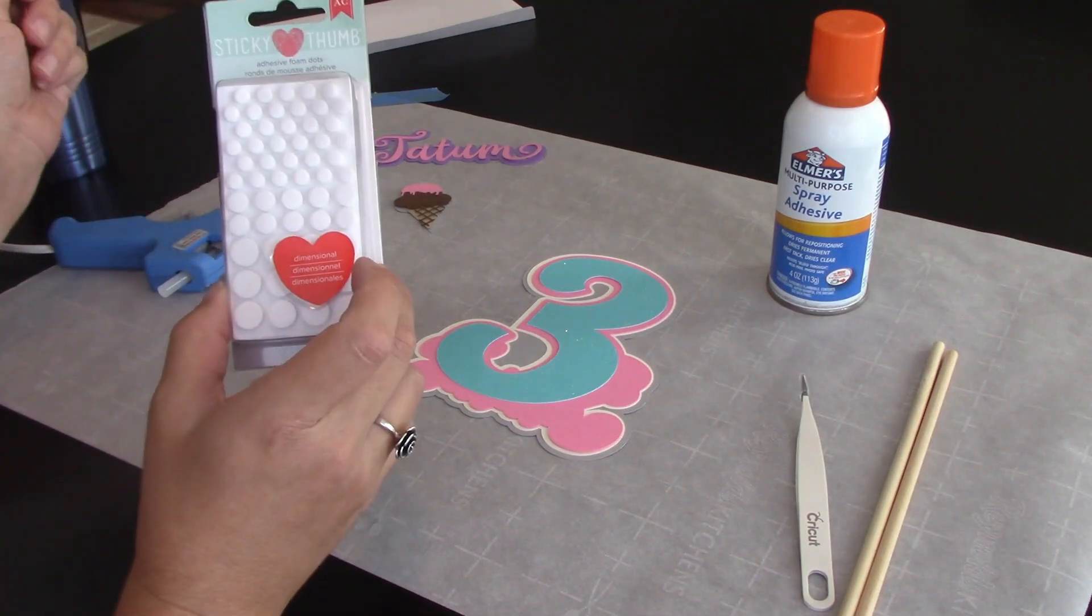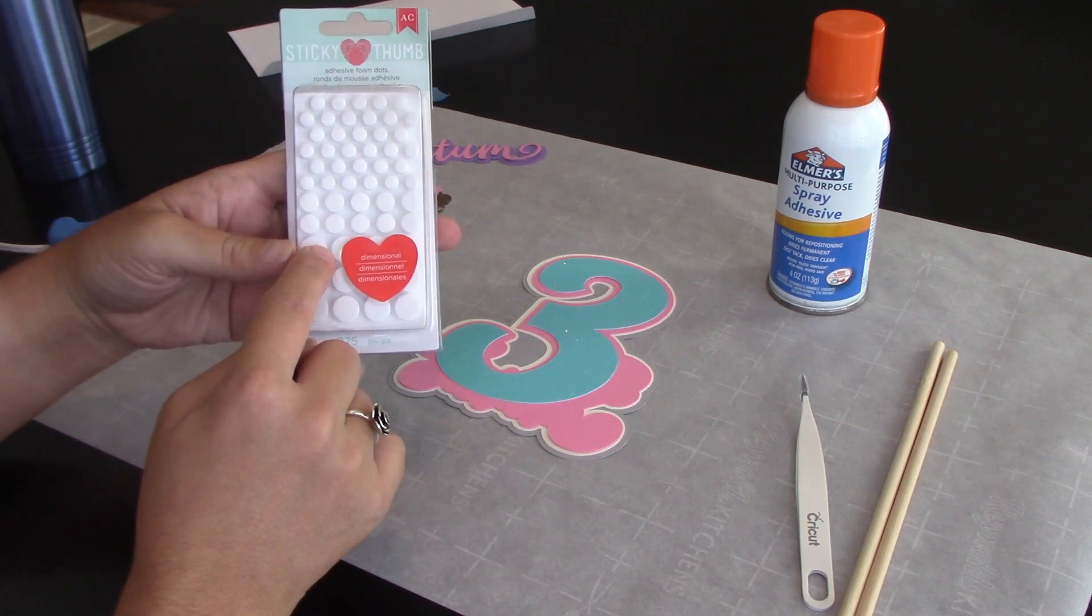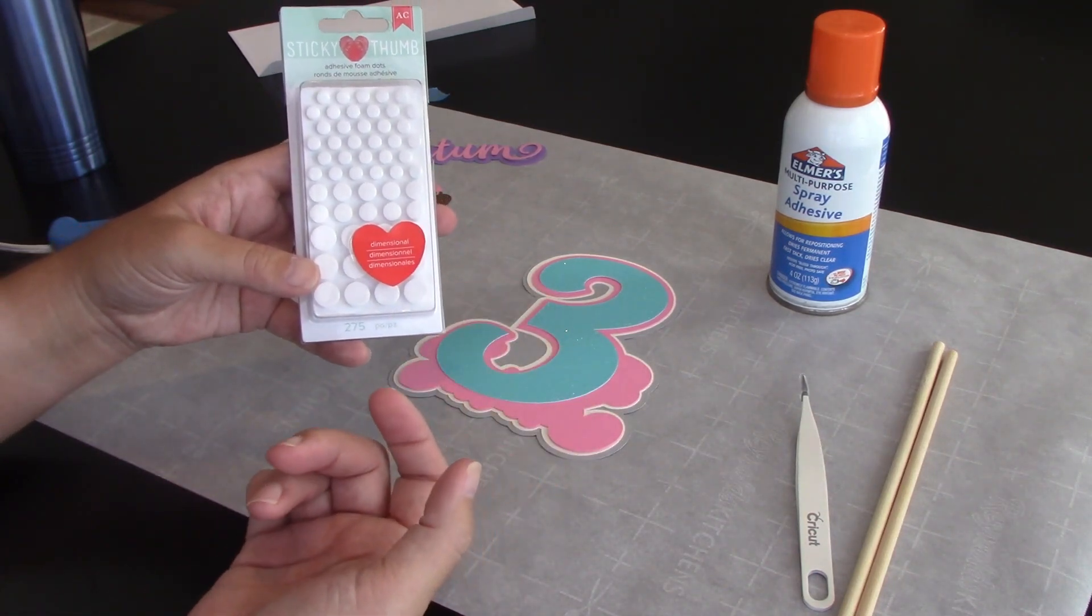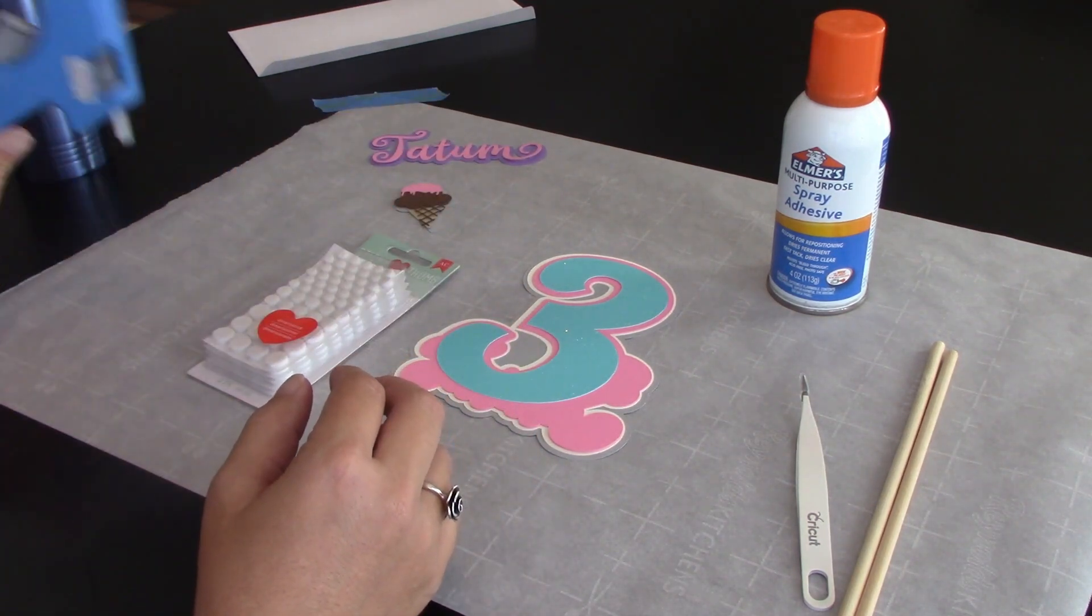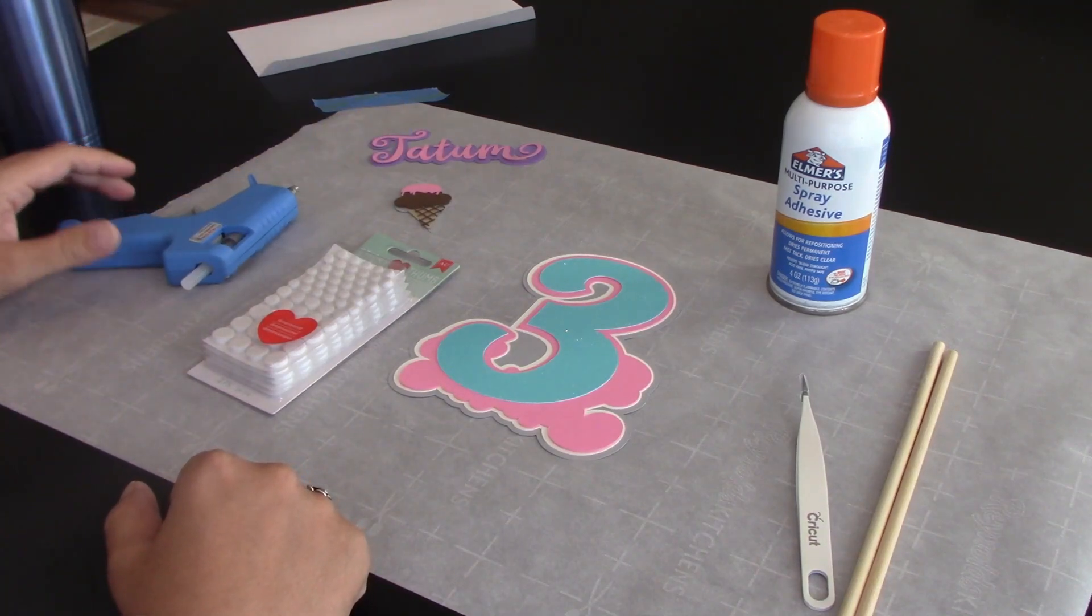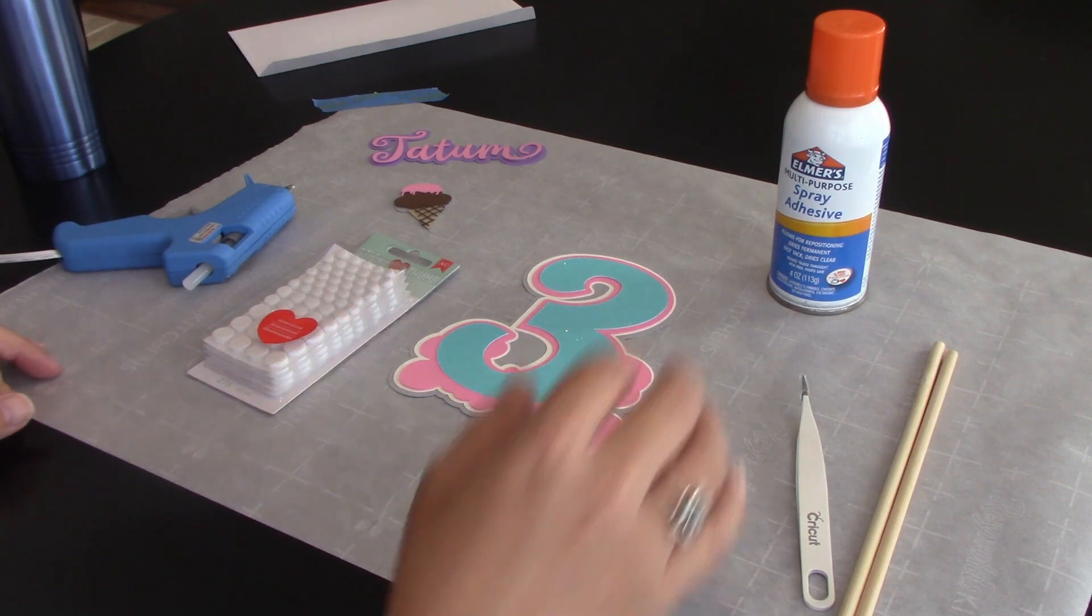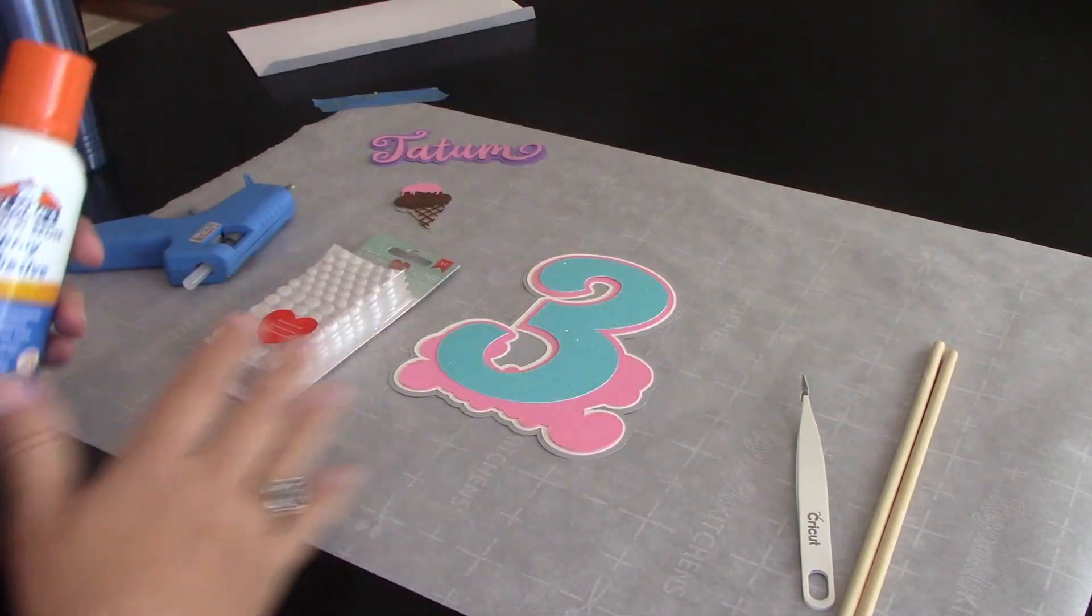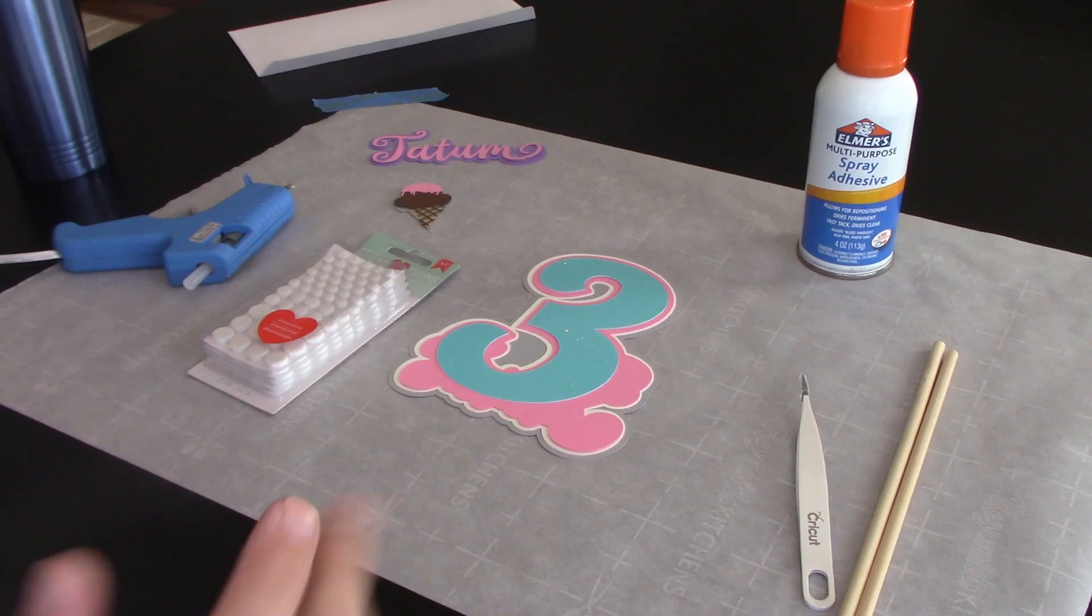You're going to need some foam dots. These are double-sided sticky and they're dimensional dots. They're what give your project the 3D look. And you're going to need a glue gun. I have lined my table with parchment paper because when you're working with this spray glue, it's like spray paint, it has a splatter and I don't want it on my table.